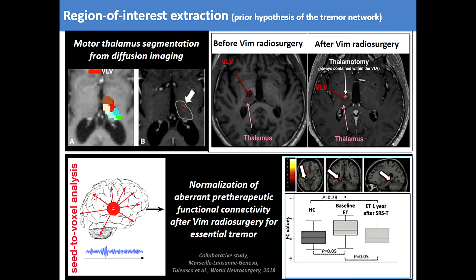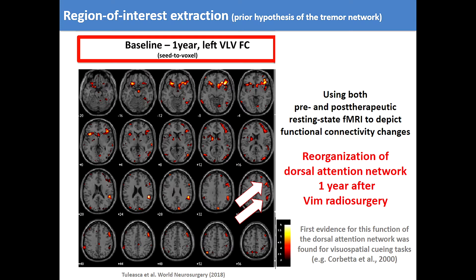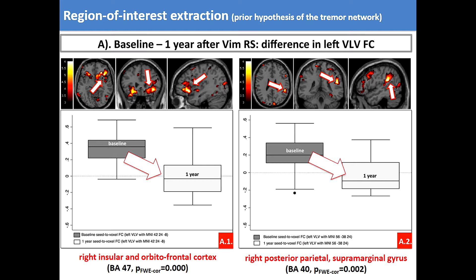This was a quite important and interesting finding, again related to visual clusters. Using both pre- and post-therapeutic data, we also showed reorganization of the dorsal attention network one year after radiosurgery, which is extremely important as it is related to visual-spatial cueing tasks relevant in essential tremor. We also observed changes including decreasing connectivity in the right insular and orbitofrontal cortex, and in the right posterior parietal and supramarginal gyrus, which are also known to be affected in essential tremor.